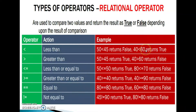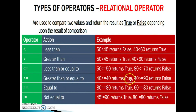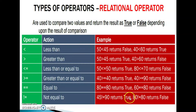More examples: 50 greater than 45 is true. 40 greater than 60 is false. 50 less than or equal to 50 returns true. 80 less than or equal to 70 returns false. 40 greater than or equal to 40 returns true. 40 greater than or equal to 90 returns false. 80 equal to equal to 80 is true. 60 equal to equal to 80 is false. 45 not equal to 90 is true. 80 not equal to 80 is false.